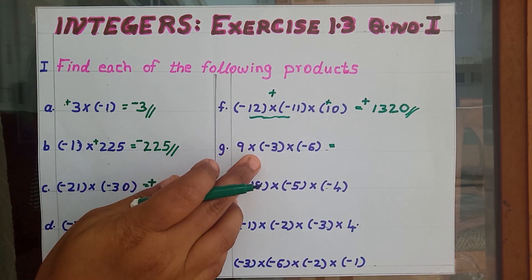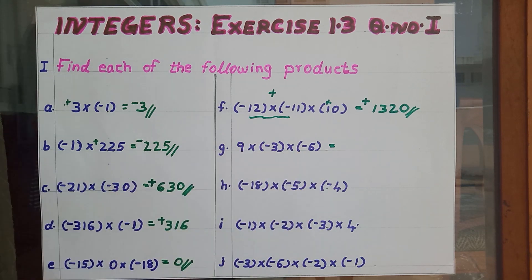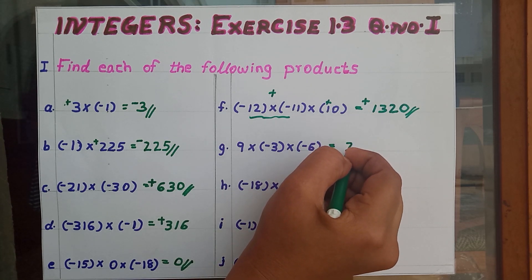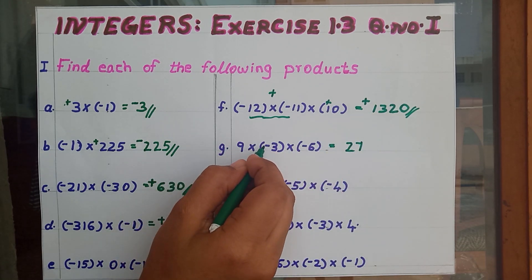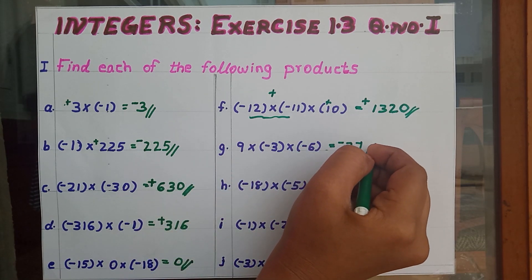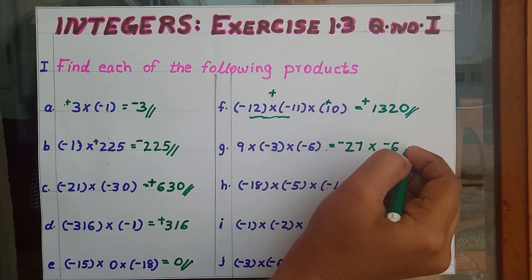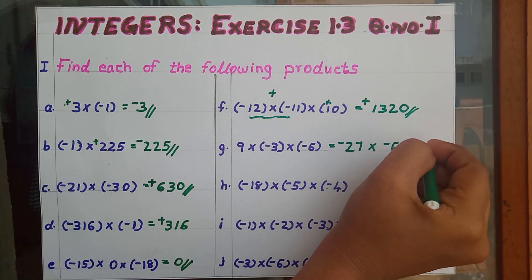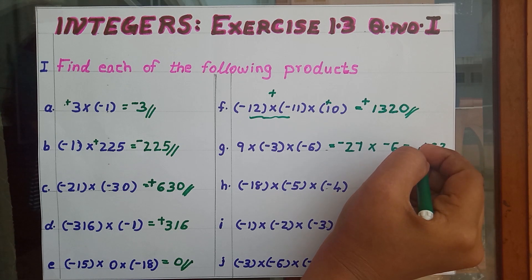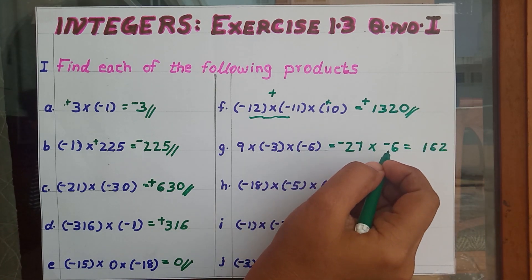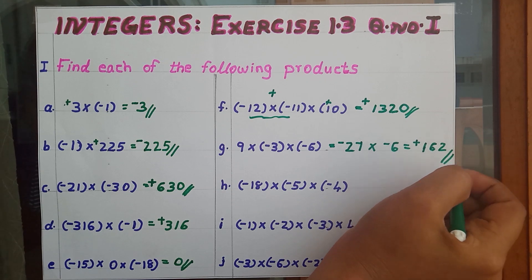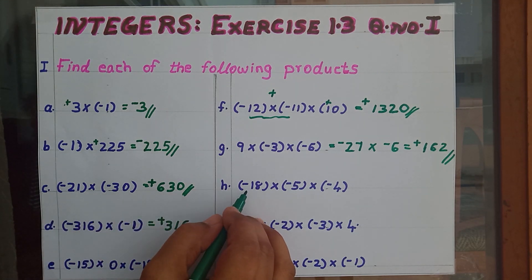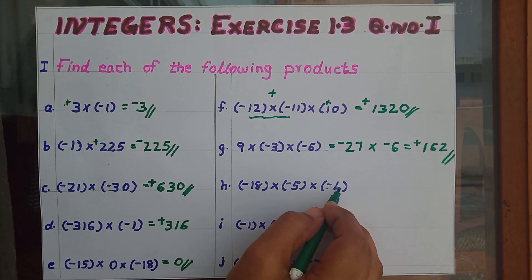Next one: 9 into minus 3 into minus 6. First find 9 into 3, that is 27. Plus into minus gives minus — so minus 27 into minus 6. Minus 27 into 6 gives 162.